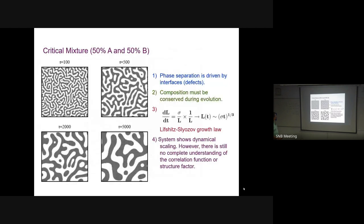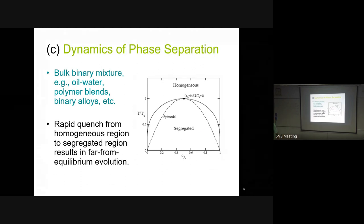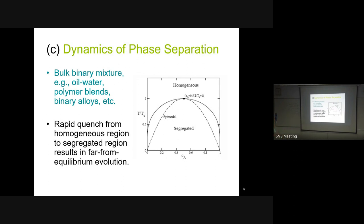The Lifshitz-Slyozov-Wagner result applies in the limit of a vanishing fraction of one component separating in a background of the other. There are still sharp interfaces in the conserved system, so you know it will have a Porod law at large k, but you don't know the complete scaling function from k=0 to k=∞, unlike the non-conserved case.